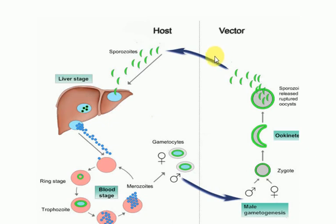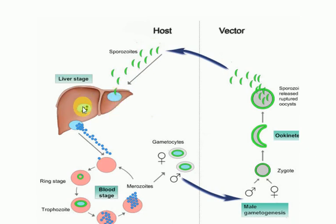When the vector bites a healthy person, it injects these sporozoites into the bloodstream of the host. These sporozoites leave the bloodstream immediately — within minutes — and enter the liver. Inside the liver, the intra-hepatic phase, or exoerythrocytic phase, begins.